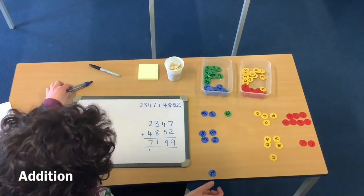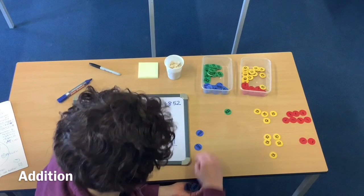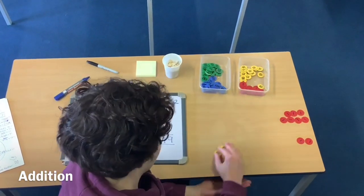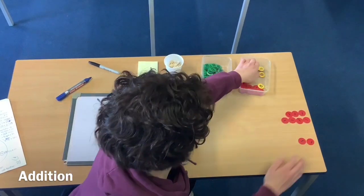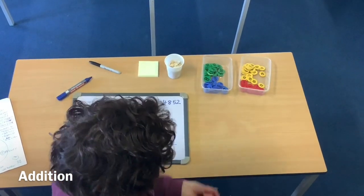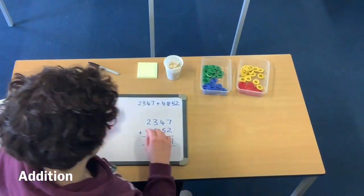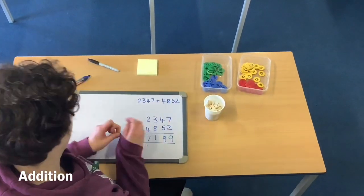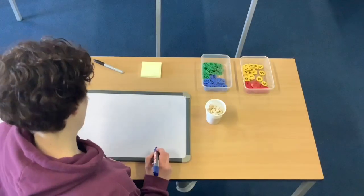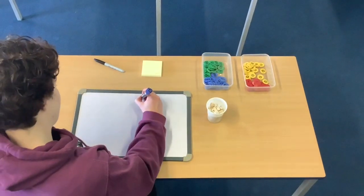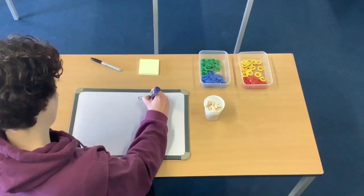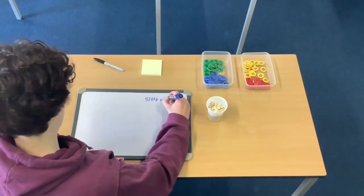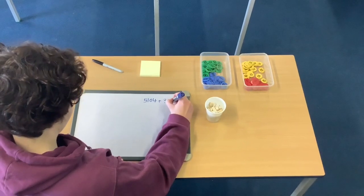Now at home you may want to have placed on your counters. So we are going to have a look at another way that we could set this out using concrete resources. You might have Lego blocks or anything that you can find. So we are going to have a go at this next question.